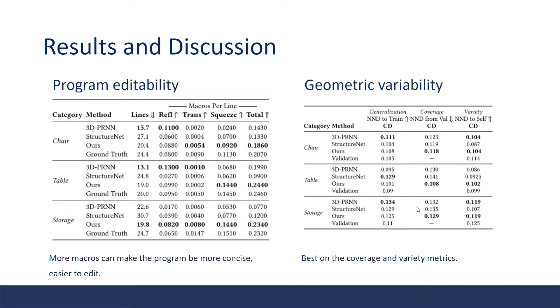To analyze program editability, we count the number of lines and commands. Generally speaking, fewer lines make programs more understandable and more macros can make the program more concise, easier to edit. To analyze geometric variability, we compute the average nearest neighbor distance between the generated samples and the training set, the validation set. Across three categories of shapes, the new method performs the best on the coverage and variety metrics.